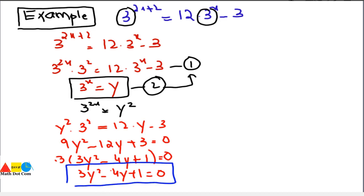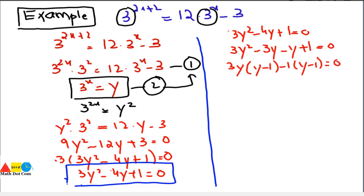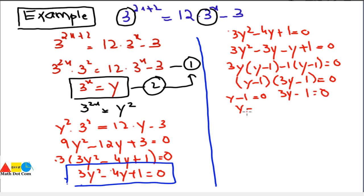We solve 3y² − 4y + 1 = 0 by factorization. The factors are 3 and 1, so we write 3y² − 3y − y + 1 = 0. Taking 3y common: 3y(y − 1) − 1(y − 1) = 0, giving (y − 1)(3y − 1) = 0. Thus y = 1 and y = 1/3.